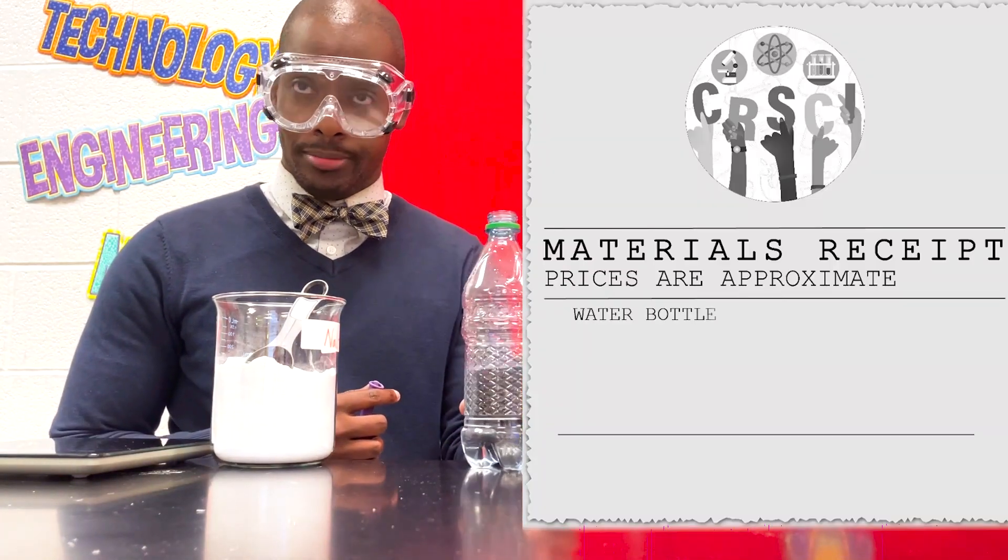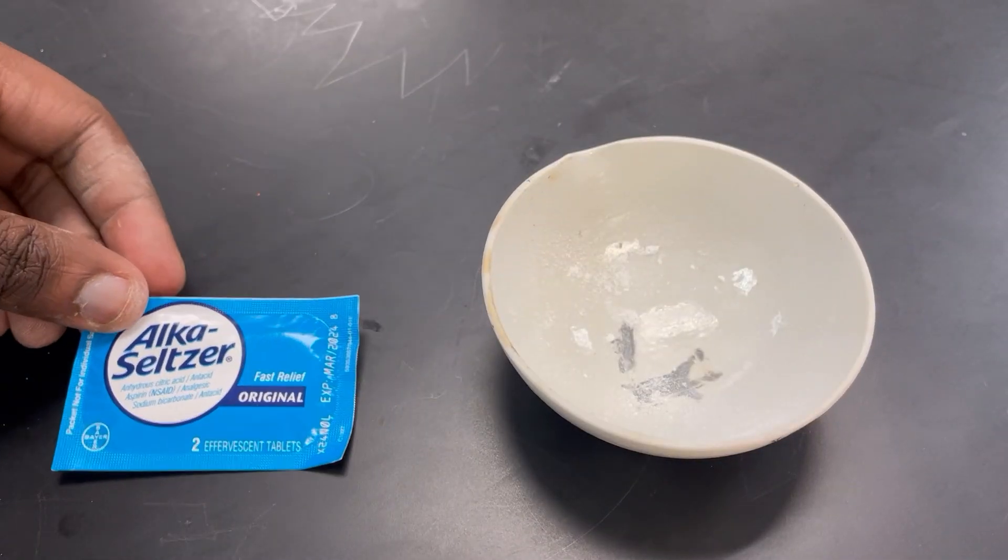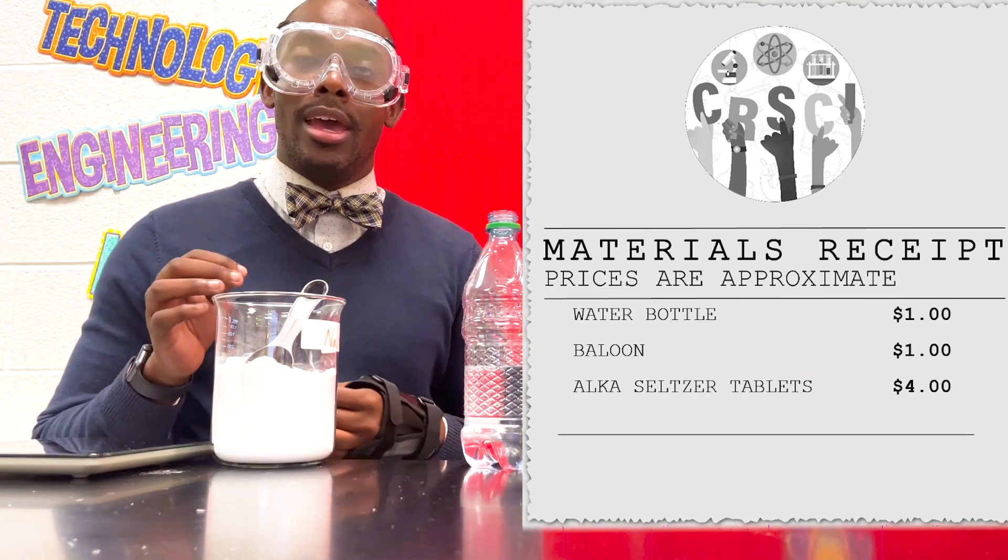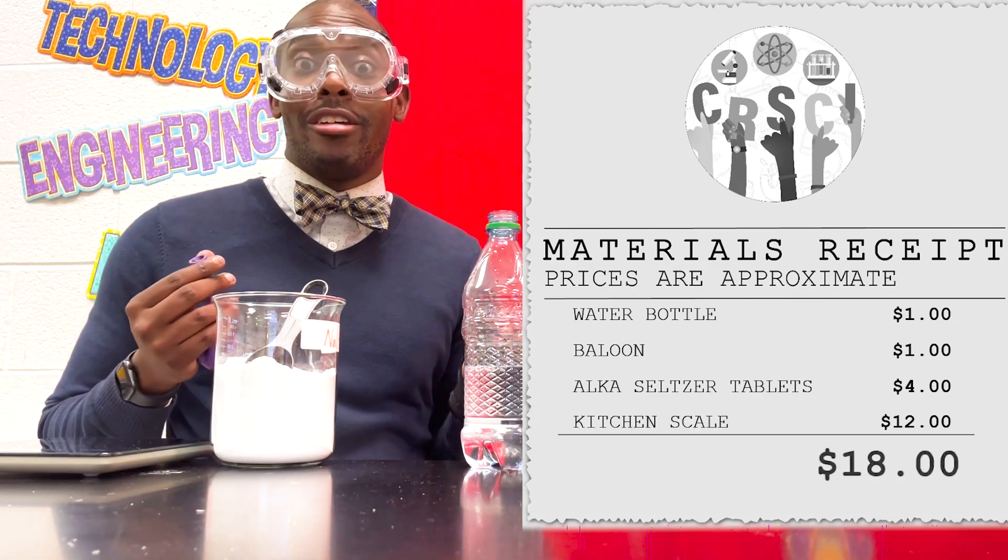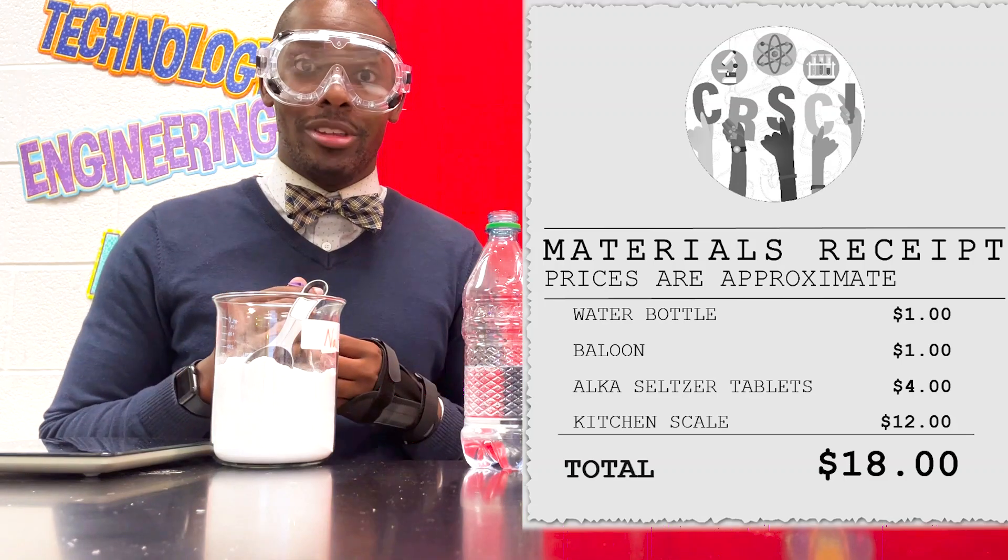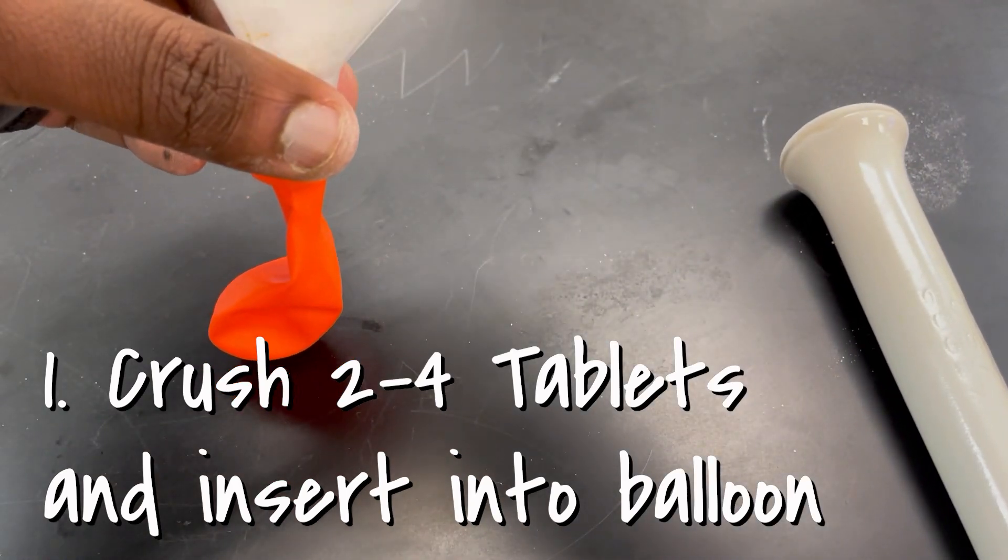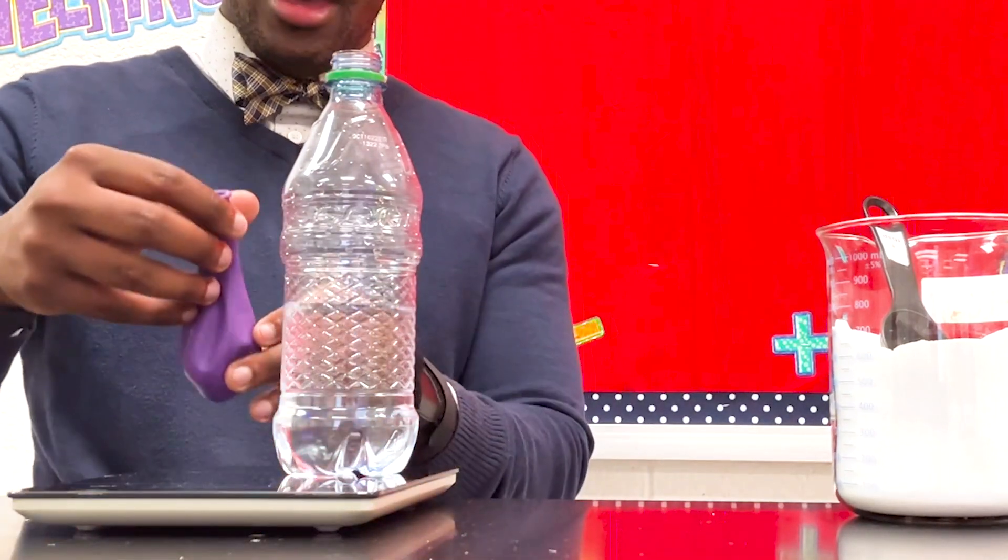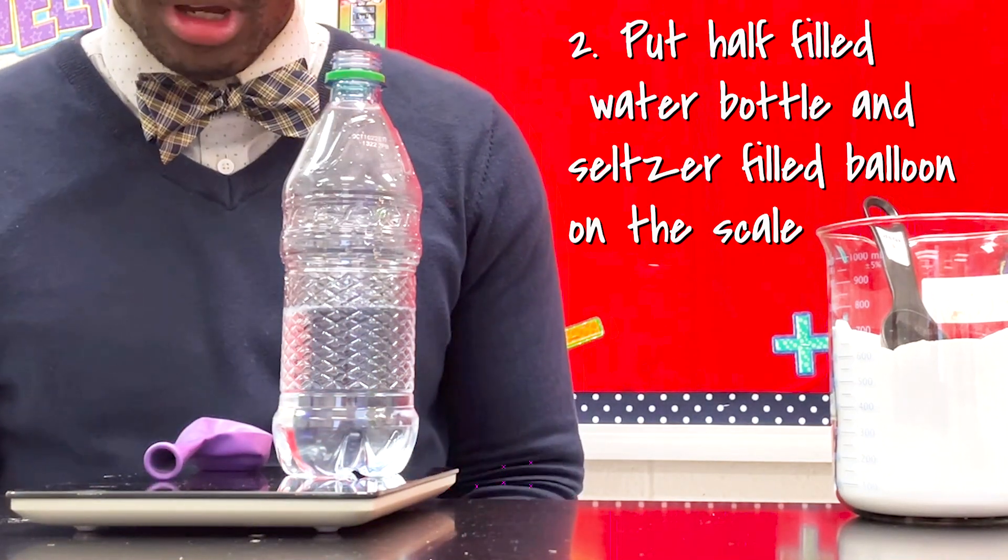All you need is a half-filled water bottle, a balloon, Alka-Seltzer tablets—I already crushed mine up—and a small kitchen scale. If you've already done our carbon dioxide balloon lab with yeast, you may already have some of these. You want to crush the tablets and insert them into the balloon.